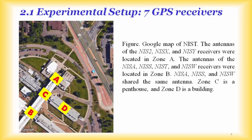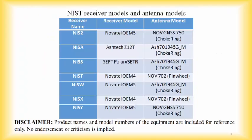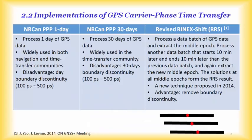For the experimental setup, we have seven NIST receivers: three located at Zone A and four at Zone B, shown on a Google map of NIST. Zone C is a penthouse for reference and Zone D is a building. The receiver models and antenna models of all seven NIST receivers include Novatel and H-tag units, with antennas that are either Choke Ring or Pinwheel type.